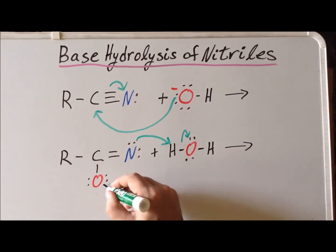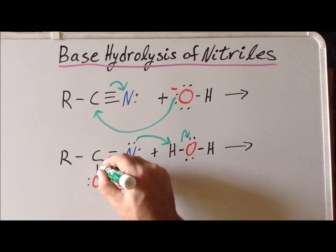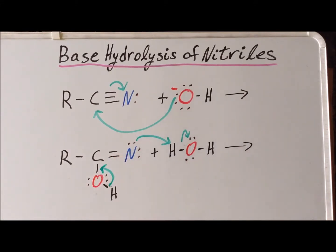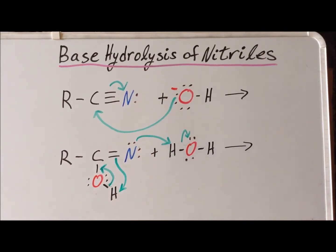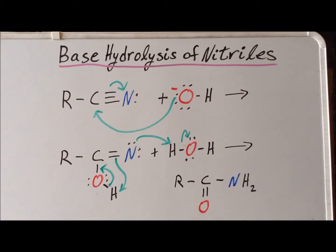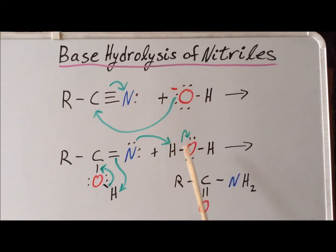The hydrogen-oxygen bond breaks and the electrons go to supplement the single bond into a double bond. Then we have flow of these electrons to pick up the hydrogen from the hydroxyl group. The result of the first series of steps is the formation of this amide. Notice that the one mole of hydroxide ion used in the first step was regenerated in the second step.